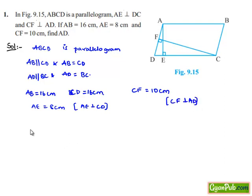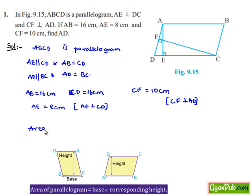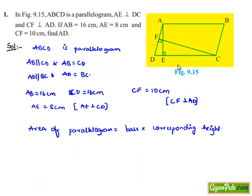Now, we know the area of parallelogram formula as product of base times corresponding height. Here, two perpendicular distances are given: CF perpendicular to AD and AE perpendicular to CD. Therefore, we can consider the base of the parallelogram while finding the area as DC and also AD.